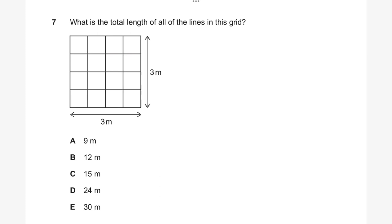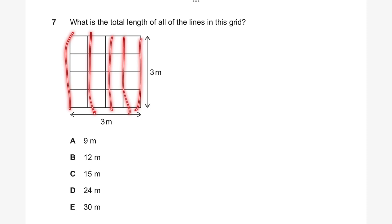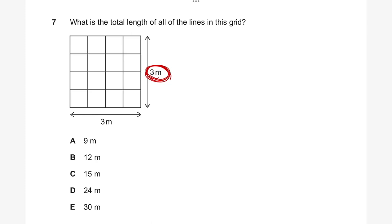Question seven asks: what is the total length of all the lines in this grid? We're looking at all lines going horizontally and vertically, working out the total length. Each line is worth three meters. Counting the vertical lines: one, two, three, four, five — five vertical lines.